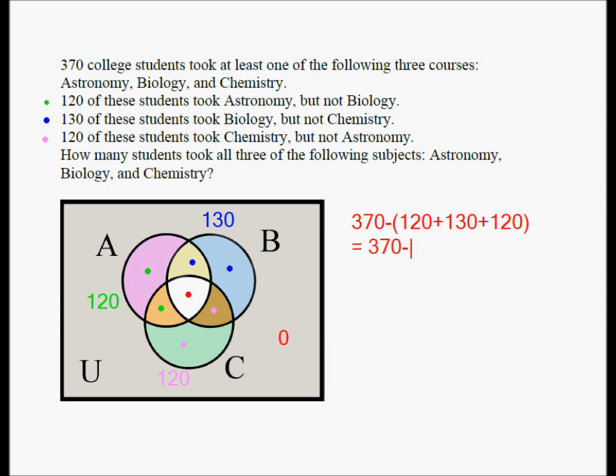370. And if you add 120, 130, 120, you're going to get 370. So when you subtract the two, you get zero. The answer is zero.